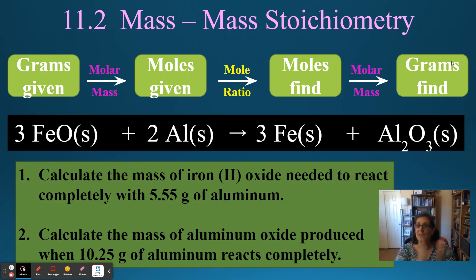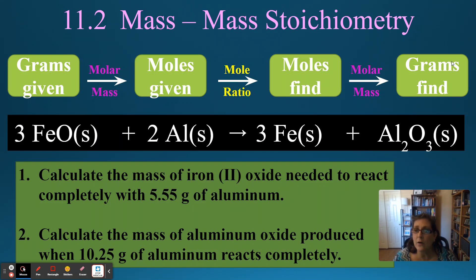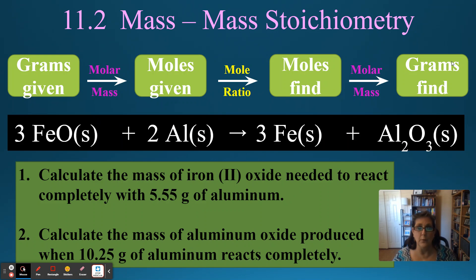Here's our balanced reaction: 3 FeO solid plus 2 aluminum solid will produce 3 iron solid plus Al₂O₃ solid. This reaction is already balanced for you.